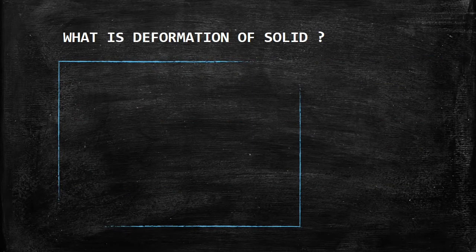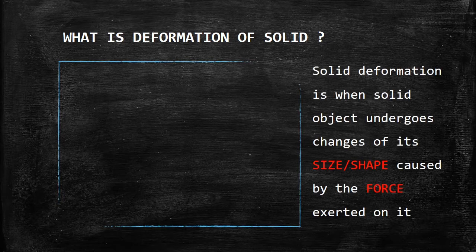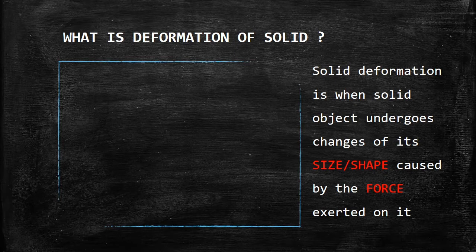Many of you must wonder what is deformation of solid. Actually, it happens in our daily life. By definition, solid deformation occurs when solid object undergoes changes of its size or shape caused by the force exerted on it.